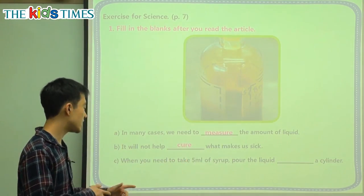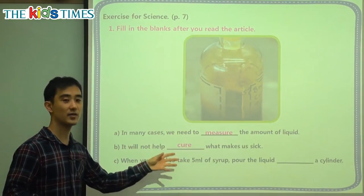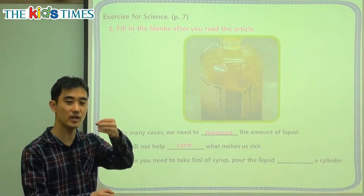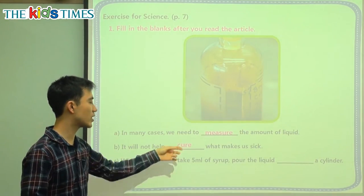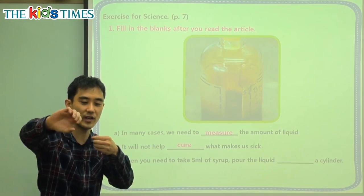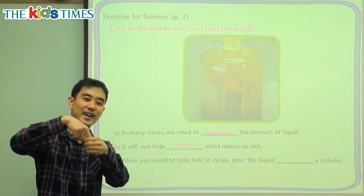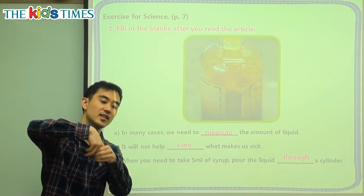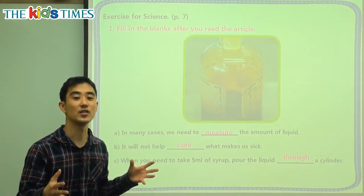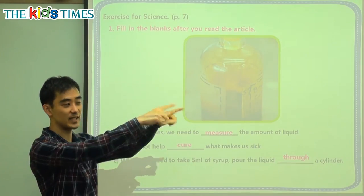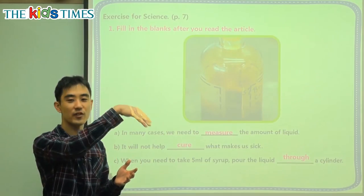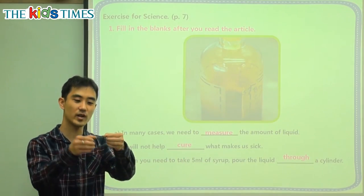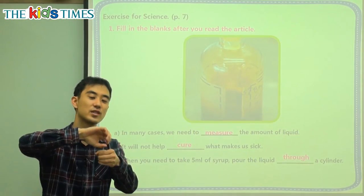Question C: When you need to take 5 milliliters of syrup, pour the liquid blank a cylinder. The cylinder is that tool with the lines. When we are pouring the liquid, we pour it inside — we say we pour it through the cylinder. Through means it's going inside something. Like when driving through a tunnel — we're going inside the tunnel. Same with the cylinder: we put the liquid inside, we put it through the cylinder.